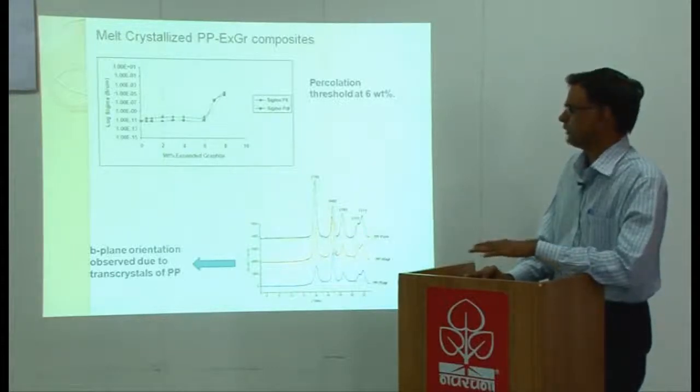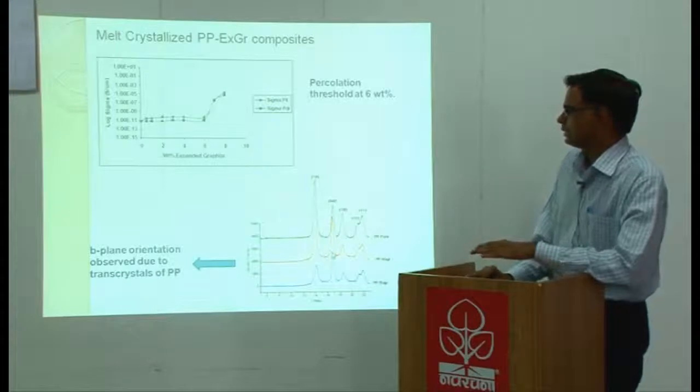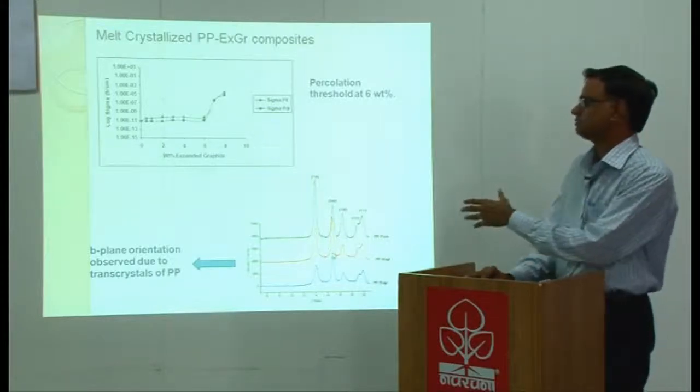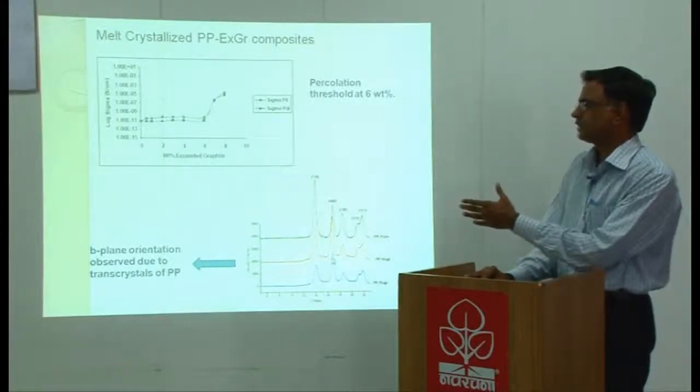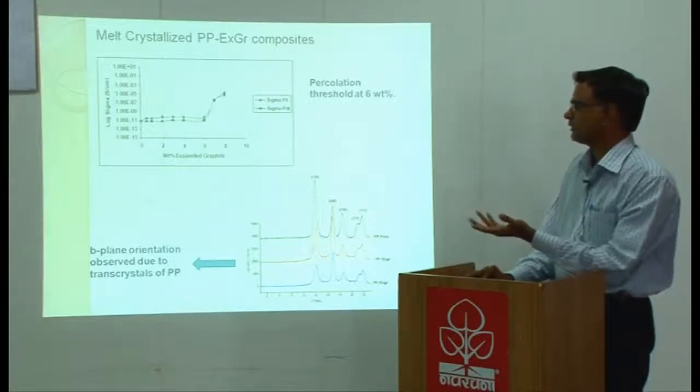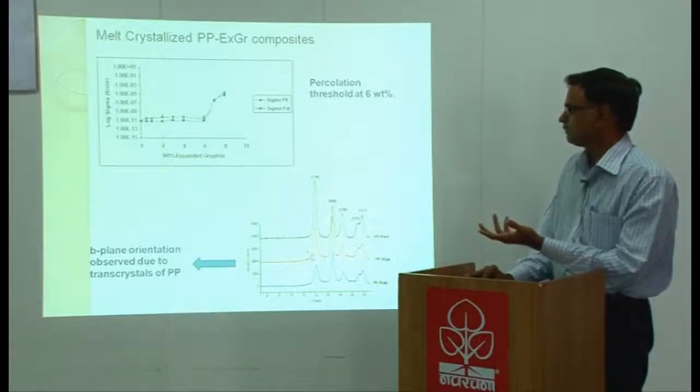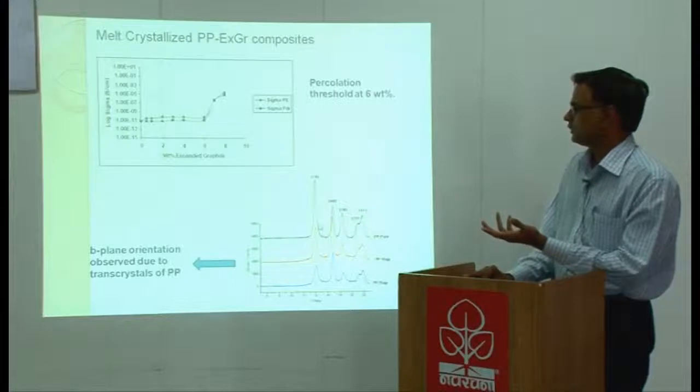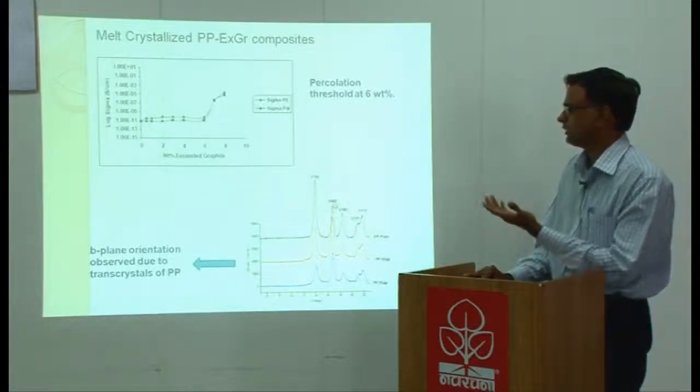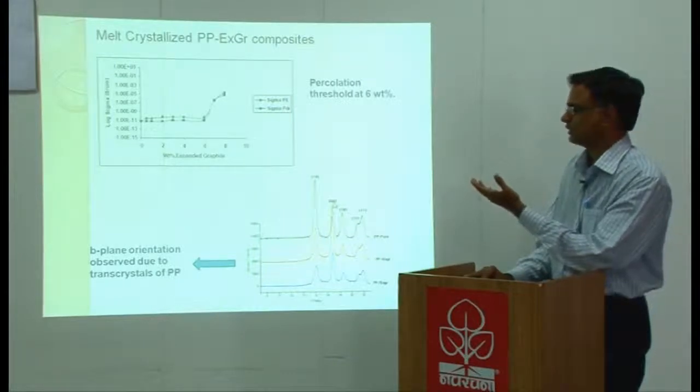There is a new structure which has been formed just by changing the processing route. From powder processing I get this, nothing else, this is same as alpha PP. But when I go for melt crystallization you get a different structure because the reflection from different planes becomes dominant. So accordingly the properties are totally different.